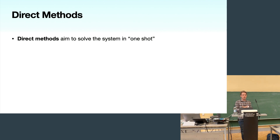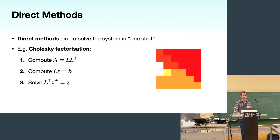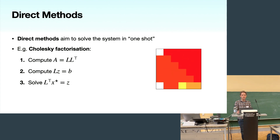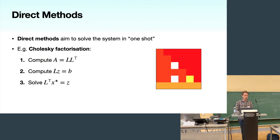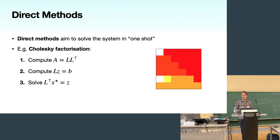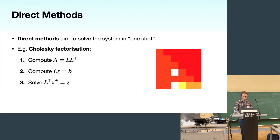The first class are called direct methods. They solve the linear system in one shot. An important example, particularly in Gaussian distributions and Gaussian processes, is a Cholesky factorization. These methods function by first computing a matrix decomposition which simplifies the task of solving the linear system. In the Cholesky case, we compute a lower triangular factor L such that A = LL^T, reducing the problem to forward and backward substitution.